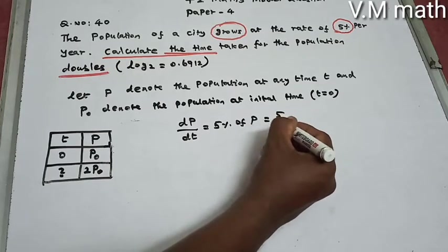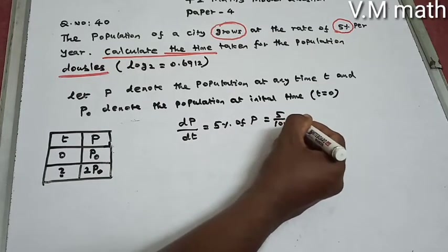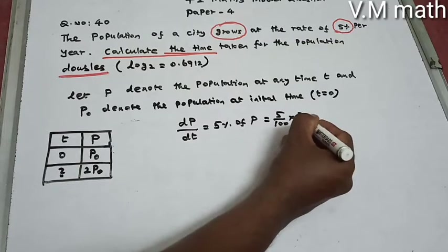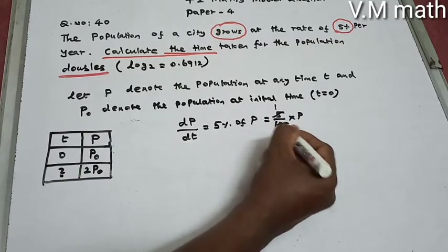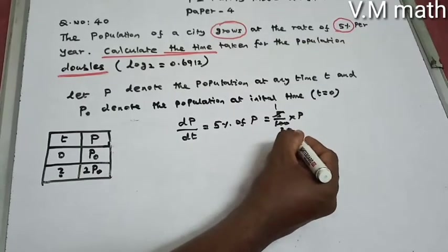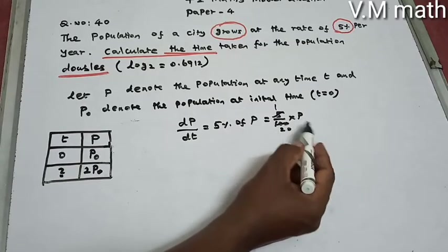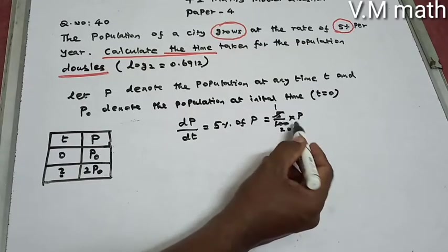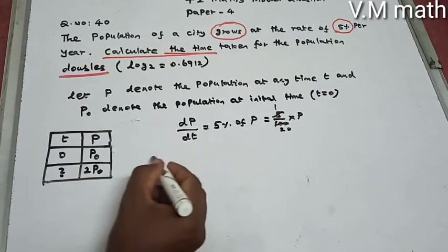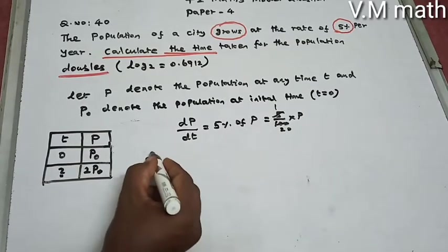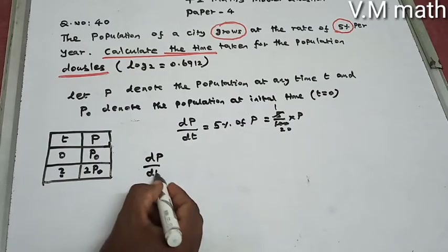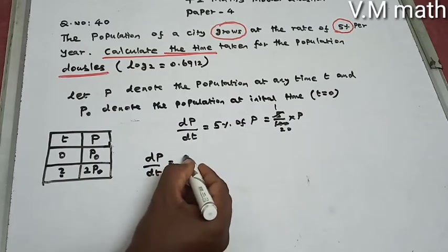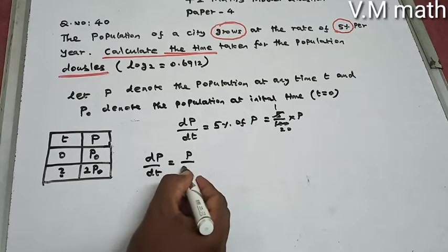The rate of growth gives us dP/dt equals P divided by 20. So this differential equation is dP/dt equals P divided by 20.